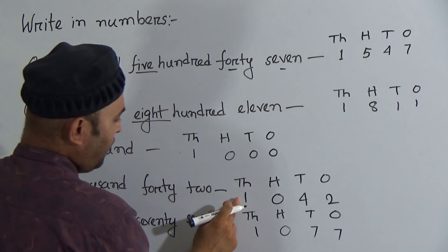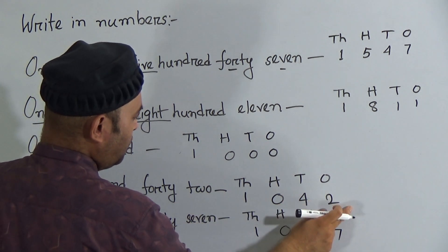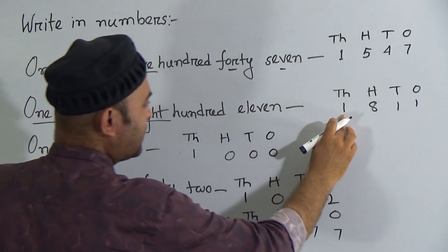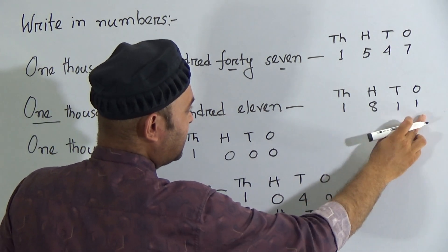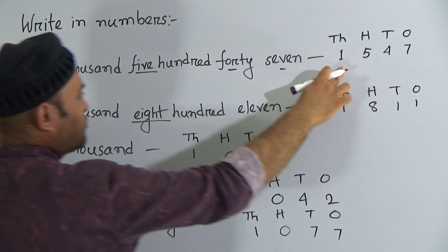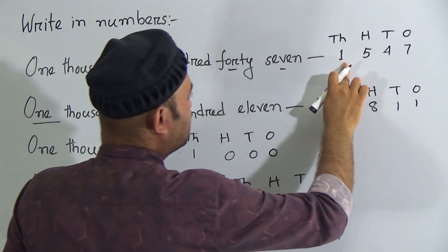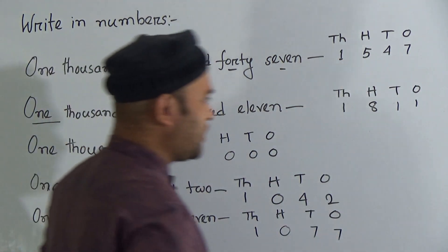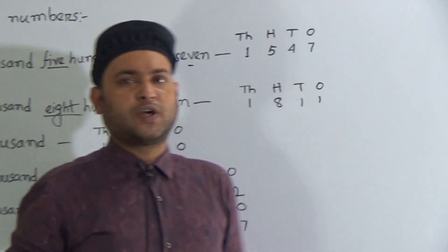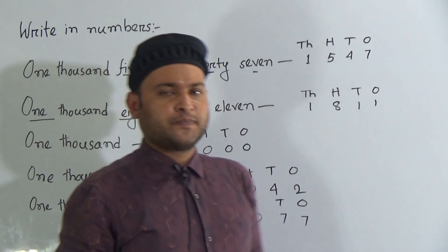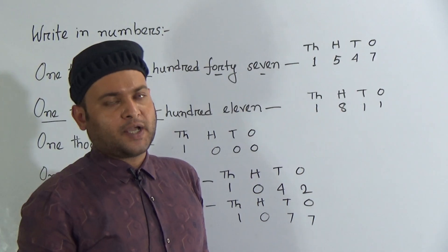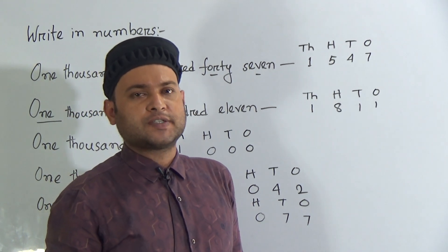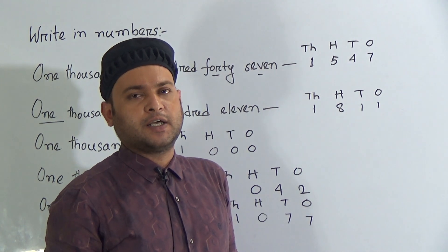To recap: the first number is 1547, the next is 1811, then 1000, and the last is 1042 and 1077. My dear listeners, I hope you understood how to write numbers. Practice at home more and more with help from your parents. Take care of yourself. See you soon, and till then, Allah peace.